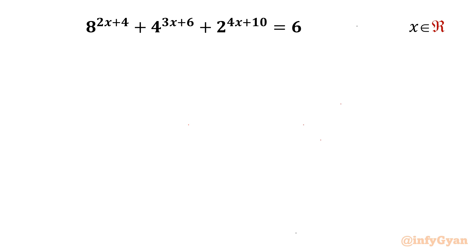Welcome back to Infigyan, my dear friends. Today in this video we are going to take up one very interesting and challenging exponential equation from Math Olympiads. The equation is 8^(2x+4) + 4^(3x+6) + 2^(4x+10) = 6. We have to find out all real solutions.